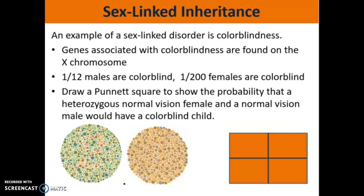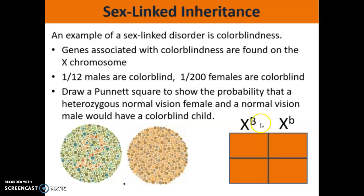Here we have a question: draw a Punnett square to show the probability that a heterozygous normal vision female and a normal vision male will have a colorblind child. The first thing we do is put the sex chromosomes in the Punnett square. The female is XX. Next to the X's, we put a big B and a little B — big B is the symbol for normal vision, little B means colorblind. So here we have a heterozygous big B, little B, normal vision female. She's a carrier; she's not colorblind, she can see fine.